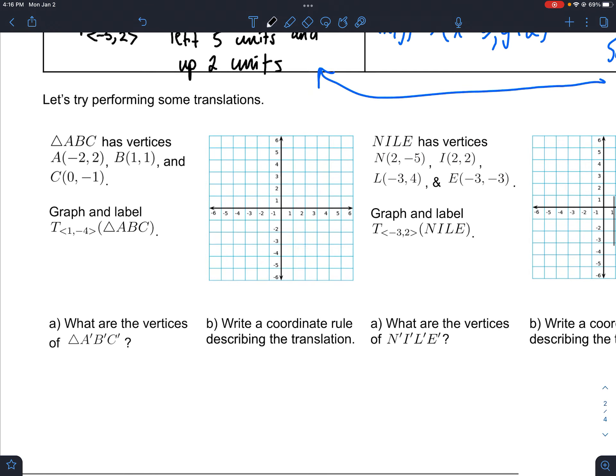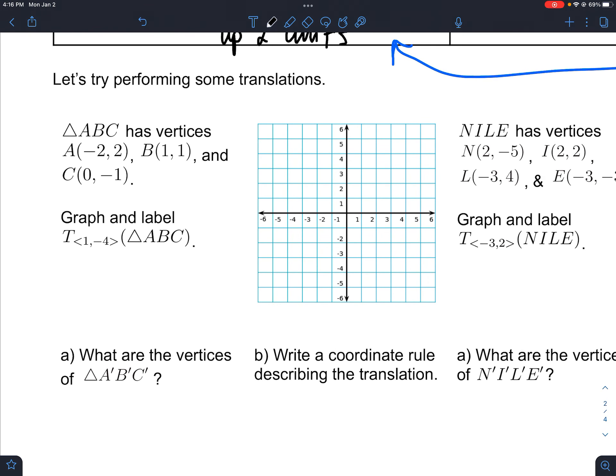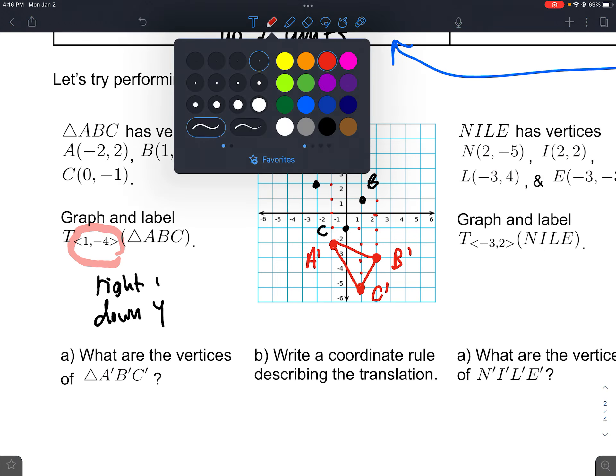Let's try this one. I want to label this, so we got A, B, and C here. We're told to go right 1 and down 4. So right 1, down 1, 2, 3, 4 - that's B prime. Start at C, go right, then down 1, 2, 3, 4 - that's C prime. And that's A prime.